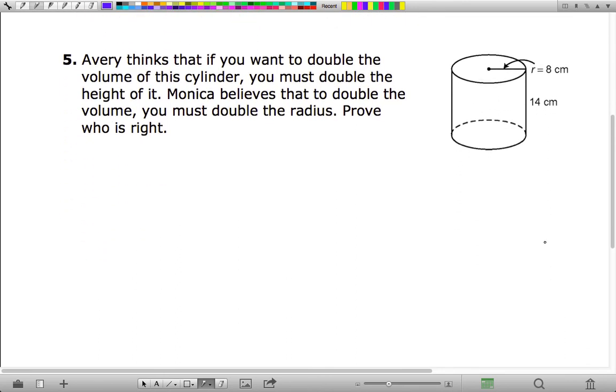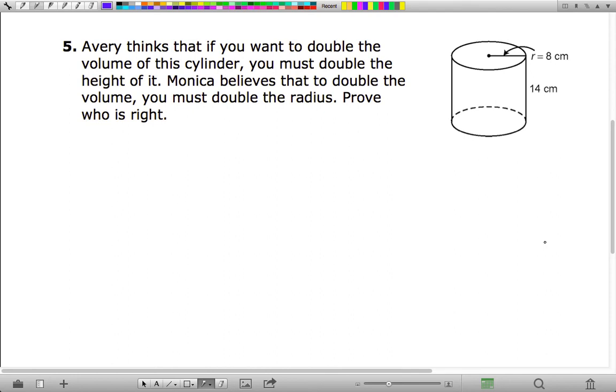Okay, last thing. It says Avery thinks that if you want to double the volume of the cylinder, you must double the height of it. Monica believes that to double the volume, you should double the radius. Prove who's right. So the initial volume before we make any changes is approximately pi times 8 squared times 14, which is 2,813.44 cubic centimeters. And now if we consider two sides to this.